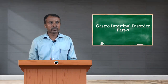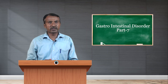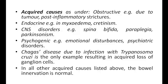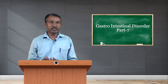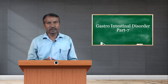Acquired causes of megacolon include obstructive causes such as trauma or post-inflammatory strictures; endocrine causes such as myxedema or cretinism; CNS disorders such as spina bifida, paraplegia, or Parkinsonism; and psychogenic causes such as emotional disturbances or psychiatric disorders.